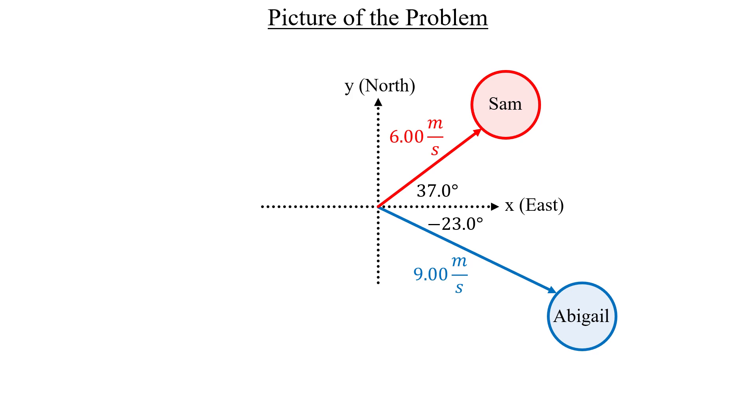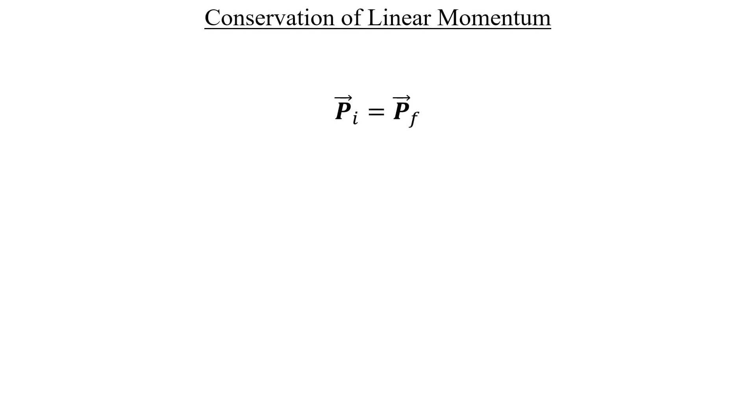We're not provided any forces or energies or anything like that. So that means we have a completely new concept to apply here, which is the conservation of linear momentum. It's very similar to the conservation of energy we've seen from the last chapter, where the initial quantity is equal to the final. Except with momentum, we're now working with vectors. The definition of momentum is mass times velocity.